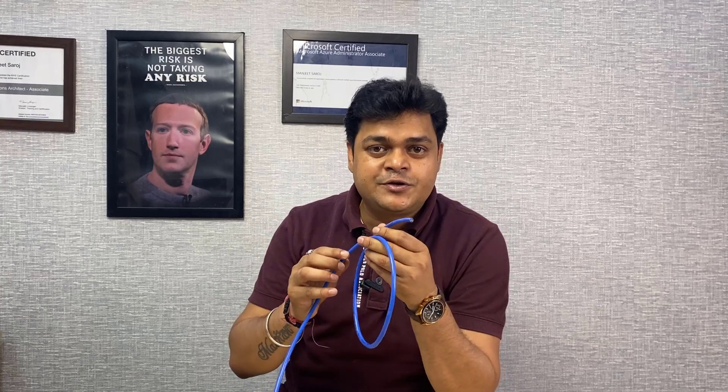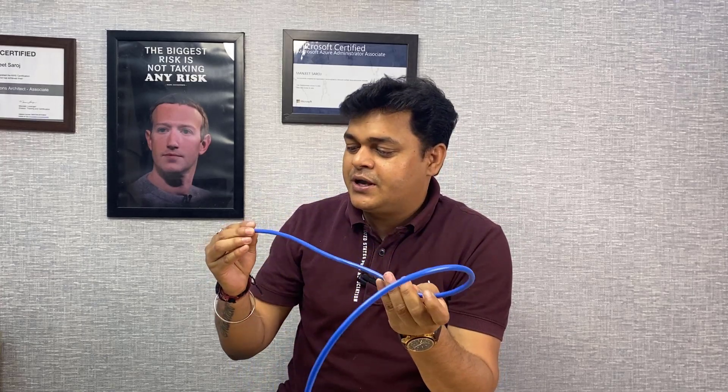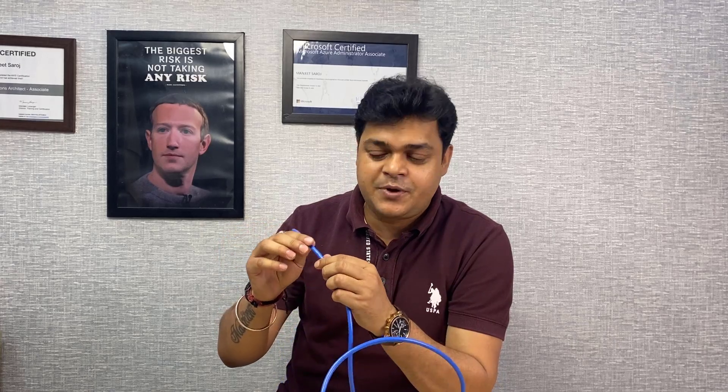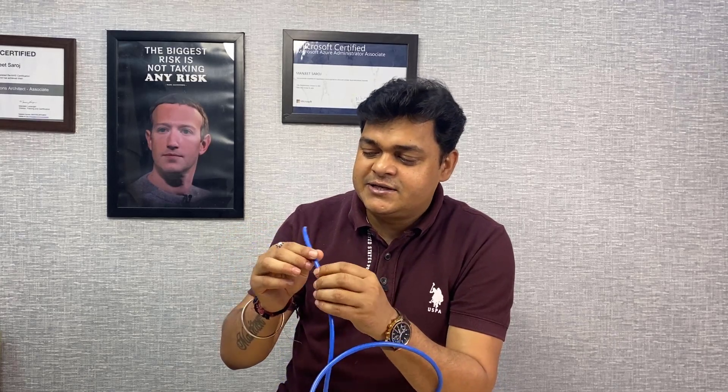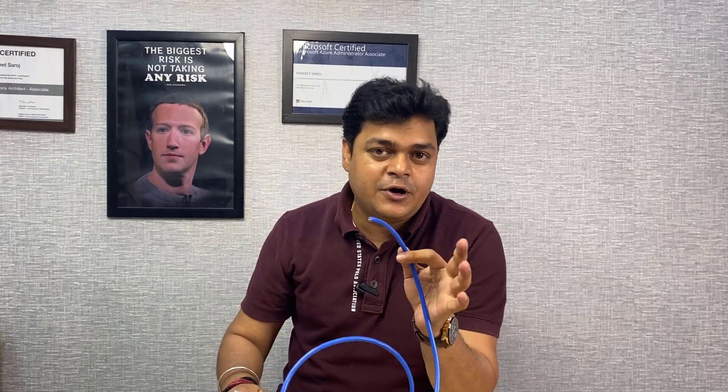This is a really important class because I am going to guide you with proper steps on how we can create a network cable. This is really important if you are preparing yourself for CCNA, Cisco Certified Network Associate, CCNP, or CCIE. We must need to know how we can create our own cable. So this is the UTP cable — Unshielded Twisted Pair cable — and the cable category is Cat 6. I am going to show you the steps to create our own cable.